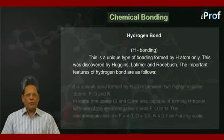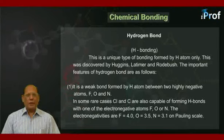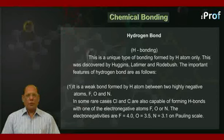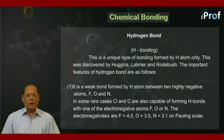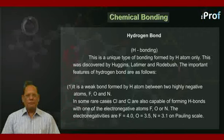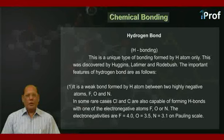Number one: it is a weak bond formed by H atom between two highly electronegative atoms — fluorine, oxygen, and nitrogen. In some rare cases, chlorine and carbon are also capable of forming hydrogen bonds with one of the electronegative atoms F, O, or N. The electronegativities are F = 4, O = 3.5, and N = 3.1 on the Pauling scale.